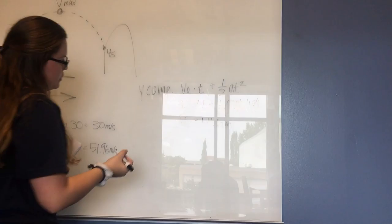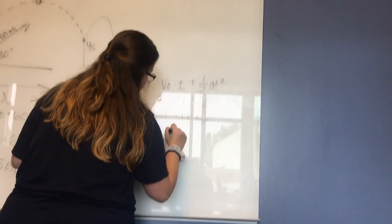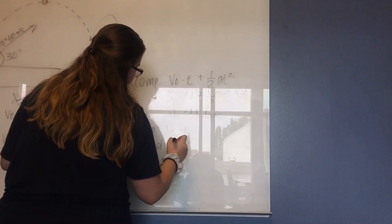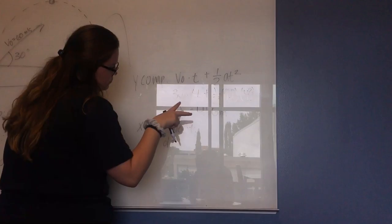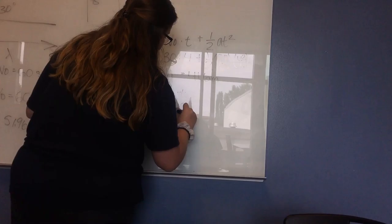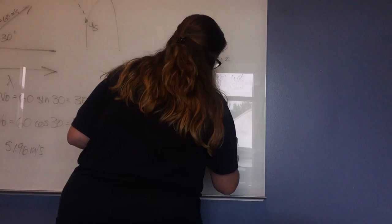For the x component we're going to use V initial times t — this is our d. We're finding the straight line distance between where it was launched and where it landed at four seconds. We're going to use the x component from part A, which is 51.96 times four, which is going to equal 207.84 meters.